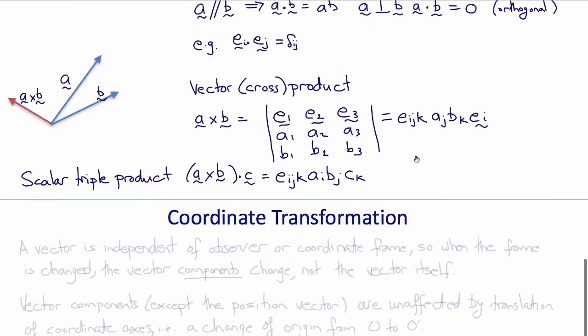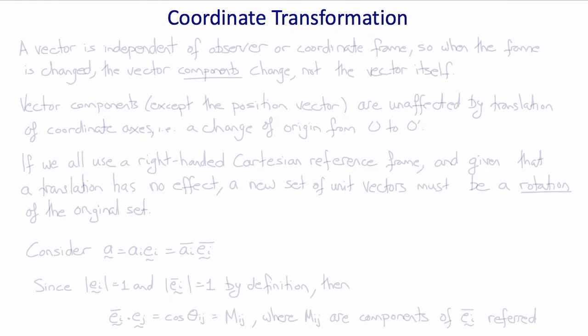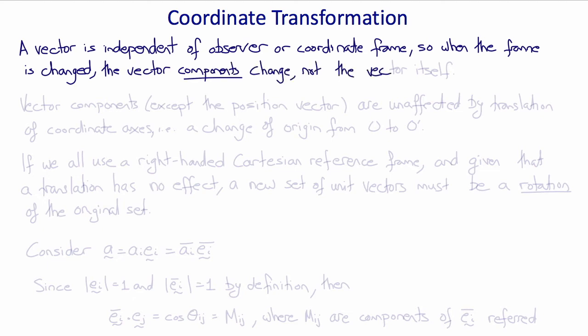Now let's look at what happens when we change the coordinates. A vector is independent of observer. It's a physical quantity and therefore must be independent of the coordinate system or frame. So when the coordinates change, the vector components must change, not the vector itself.